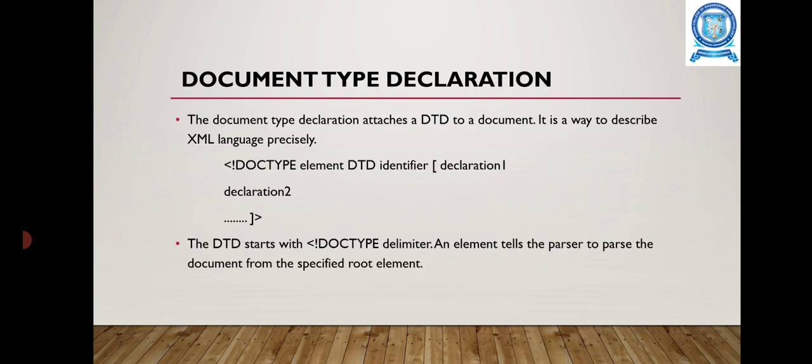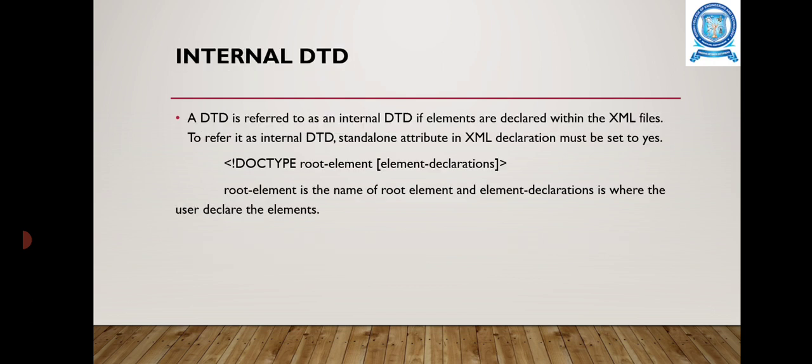The Document Type Declaration, DTD, is attached to a document and is a way to describe the XML language precisely. The DTD starts with the DOCTYPE delimiter and the element tells the parser to parse the document from a specified root element. There are two types of DTD: internal and external. Internal DTD means the elements are declared within the XML file, using the format DOCTYPE root element with element declarations.